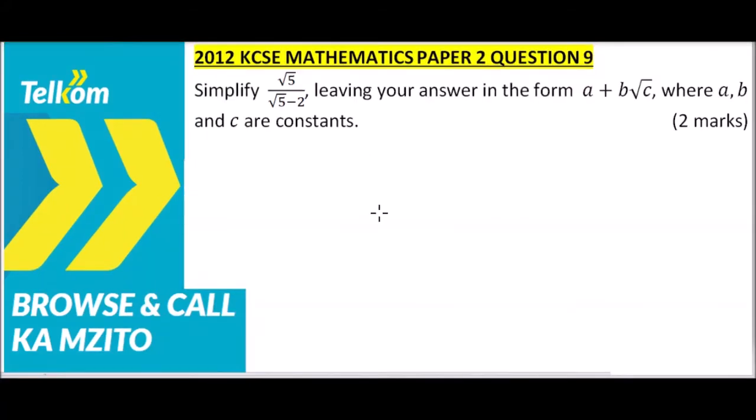This is question number 9 from 2012 KCSE Mathematics Paper 2. We are told to simplify √5 divided by √5 minus 2, leaving your answer in the form a + b√c, where a, b, and c are constants.